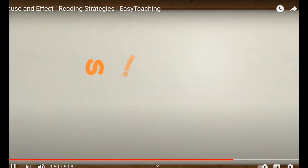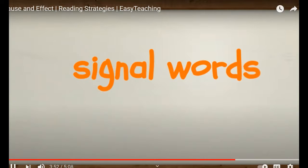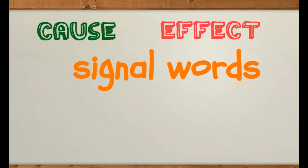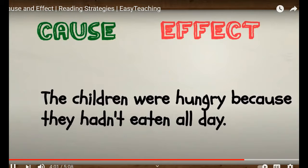Try some more on your own. In each sentence, identify the signal word or phrase, then decide which is the cause and which is the effect. The children were hungry because they hadn't eaten all day. What's the signal word? Because. Correct.